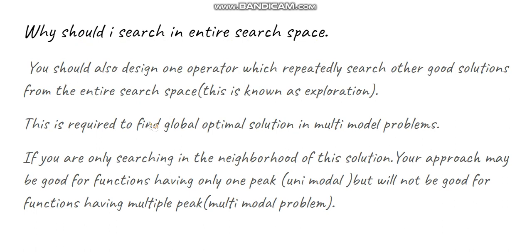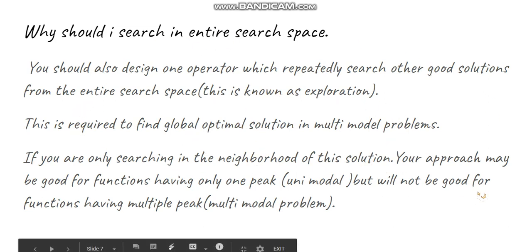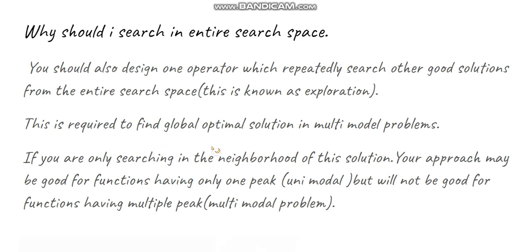But exploitation alone is not enough for designing a nature-inspired algorithm — you also need exploration. With exploration, you check the entire search space. To identify the global optimal solution for multimodal problems, you must combine both exploitation and exploration. Exploitation searches around already-selected good solutions, while exploration searches other promising areas across the entire search space. In this way, you can solve any optimization problem.